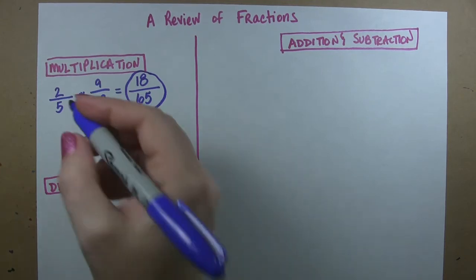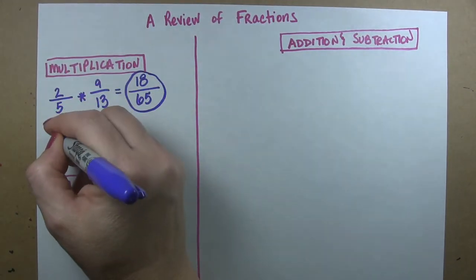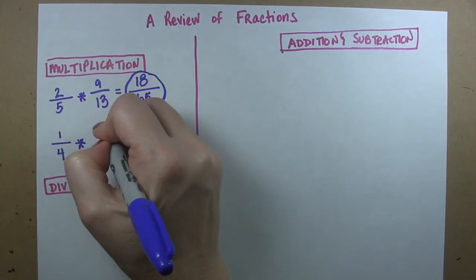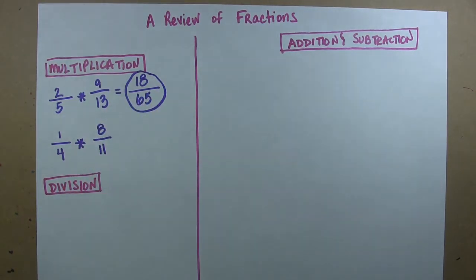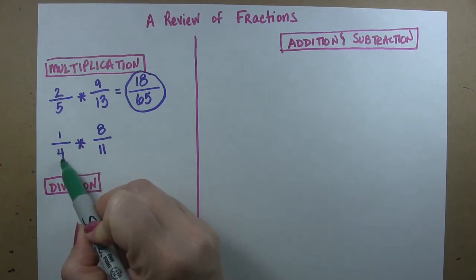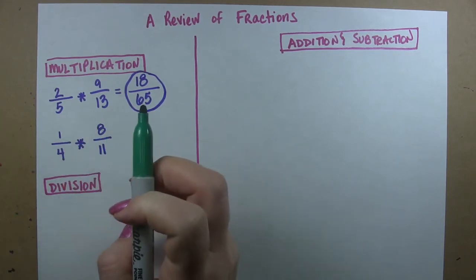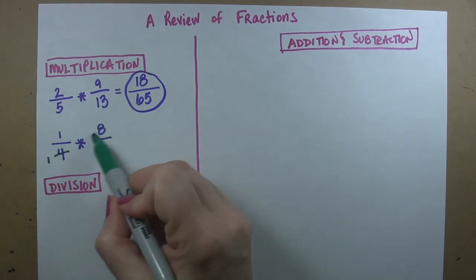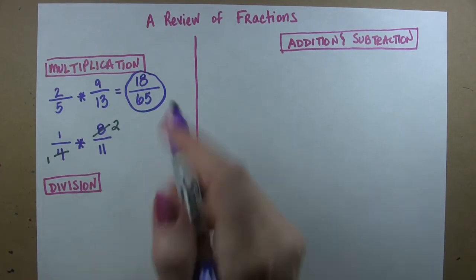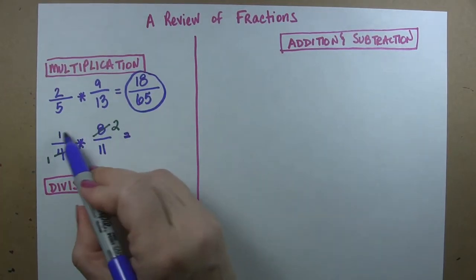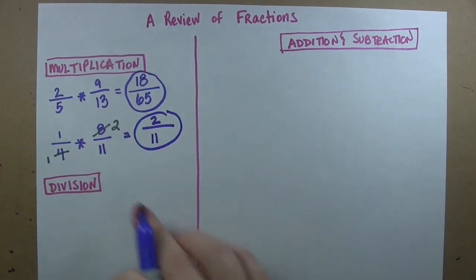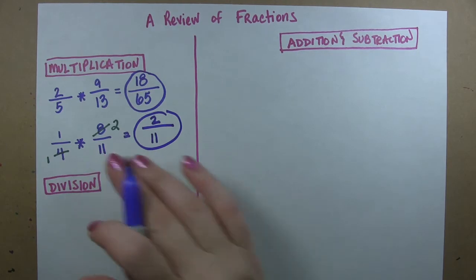Now sometimes you get multiplication problems and you might remember this. Let's say you have 1 fourth times 8 elevenths. You might remember that you can cancel terms, right? So you can say, oh these can both be reduced by 4. So 4 divided by 4 is 1, 8 divided by 4 is 2. So now we can say, well this becomes 1 times 2 over 1 times 11. That's called canceling and that is totally legitimate.